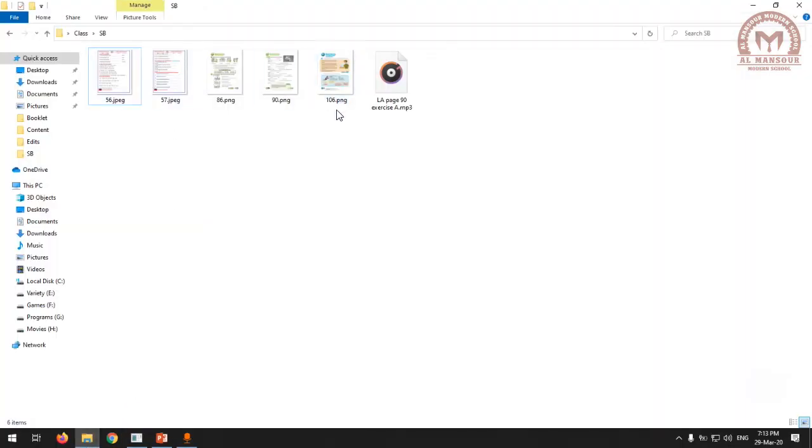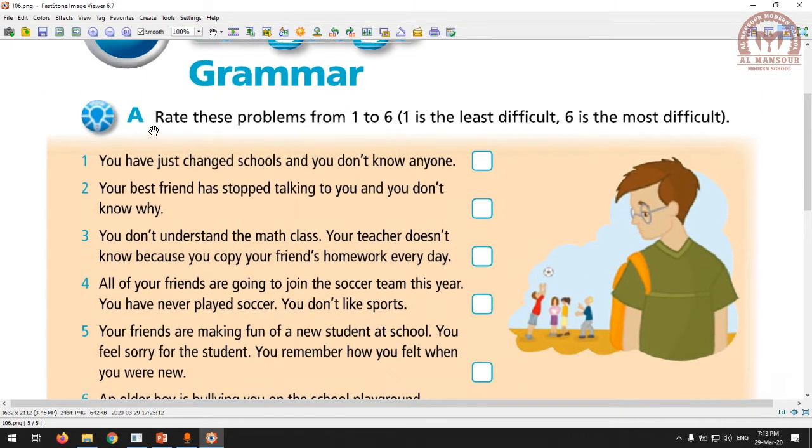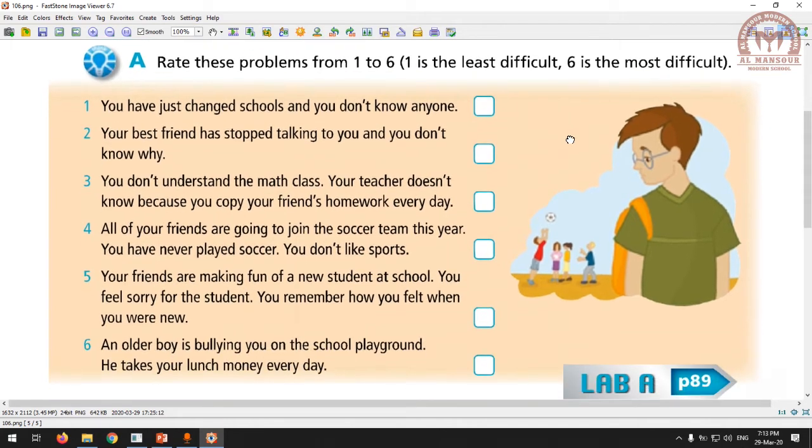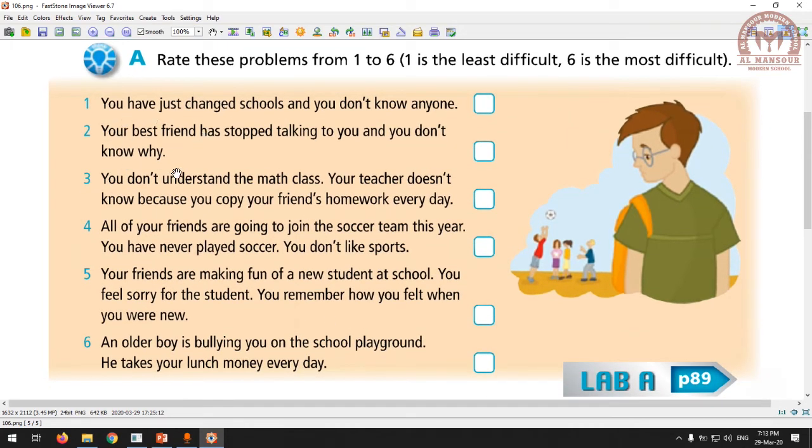Let's open the student book on page 106. We're going to rate these problems from 1 to 6 - 1 is the least difficult, 6 is the most difficult. These are different situations or scenarios and we're going to rate them. If this was too easy to fix, we put 1; if this was harder, we put 2; if this one is very hard, we put 6. I want you to do this exercise by yourself.